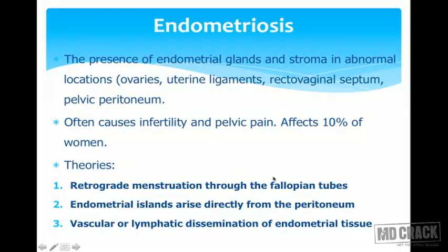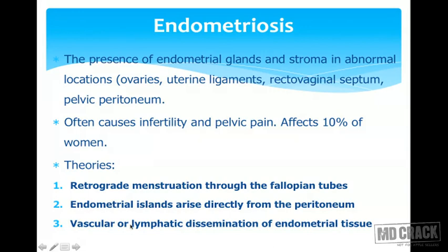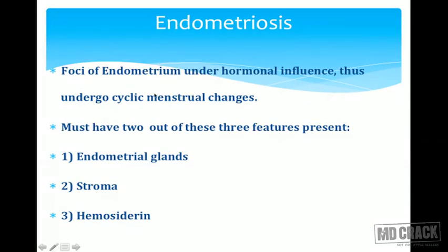The hypotheses for endometriosis include: retrograde menstruation through the fallopian tube, where endometrial glands reflux back and enter the peritoneal cavity; direct origin from peritoneum via transcelomic cells; and vascular or lymphatic dissemination explaining spread to distant sites like the lungs. These patients typically present with infertility and severe pelvic pain during menses, as the ectopic sites also bleed during menstruation, causing the pain.